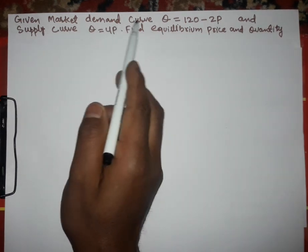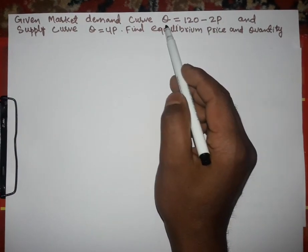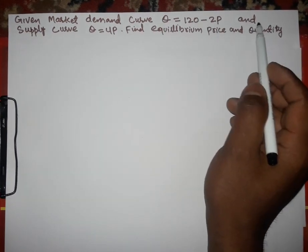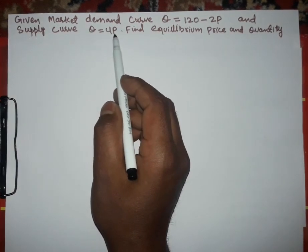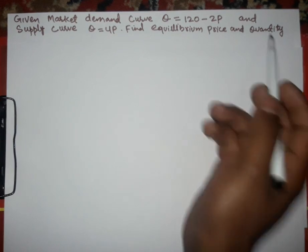Hi, this is Halal. In this video we will try to find the equilibrium price and quantity when the demand curve and supply curve are given. The question is: given the market demand curve Q = 120 - 2P, where Q is quantity and P is price, and supply curve Q = 4P, where Q is quantity and P is price — find the equilibrium price and quantity.